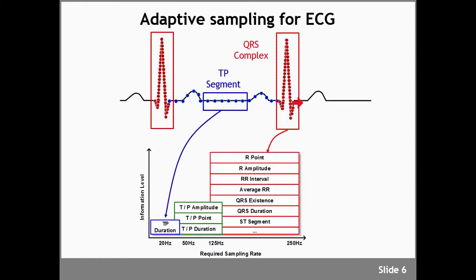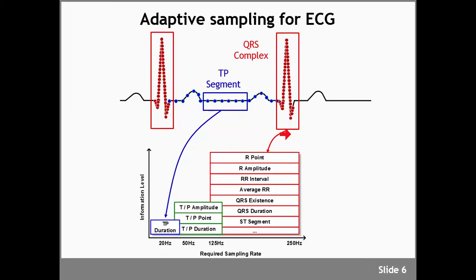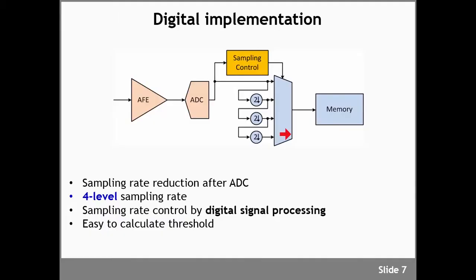In adaptive sampling you change the sampling frequency to satisfy the instantaneous bandwidth. In our ECG example you can see that regions where the signal is changing very quickly are sampled at a high rate, whereas the regions in between where the signal is fairly sparse are sampled much slower. You can immediately see that the amount of data being generated is much lower than if you simply sampled the signal at the highest rate. There are many ways to implement this, and today I'll focus on a very simplistic implementation.